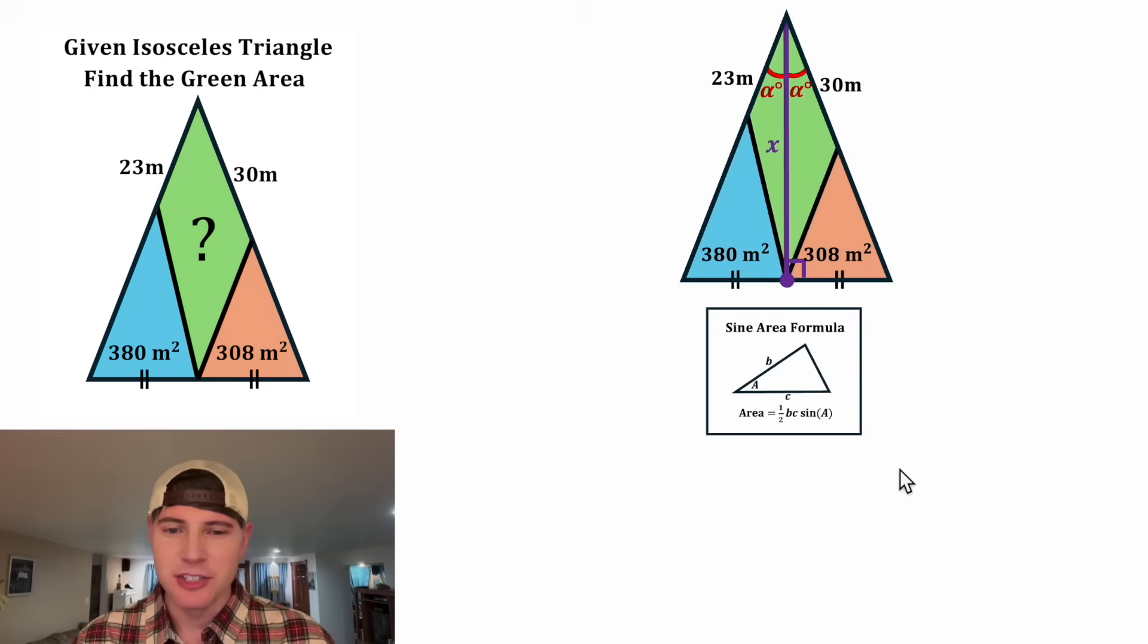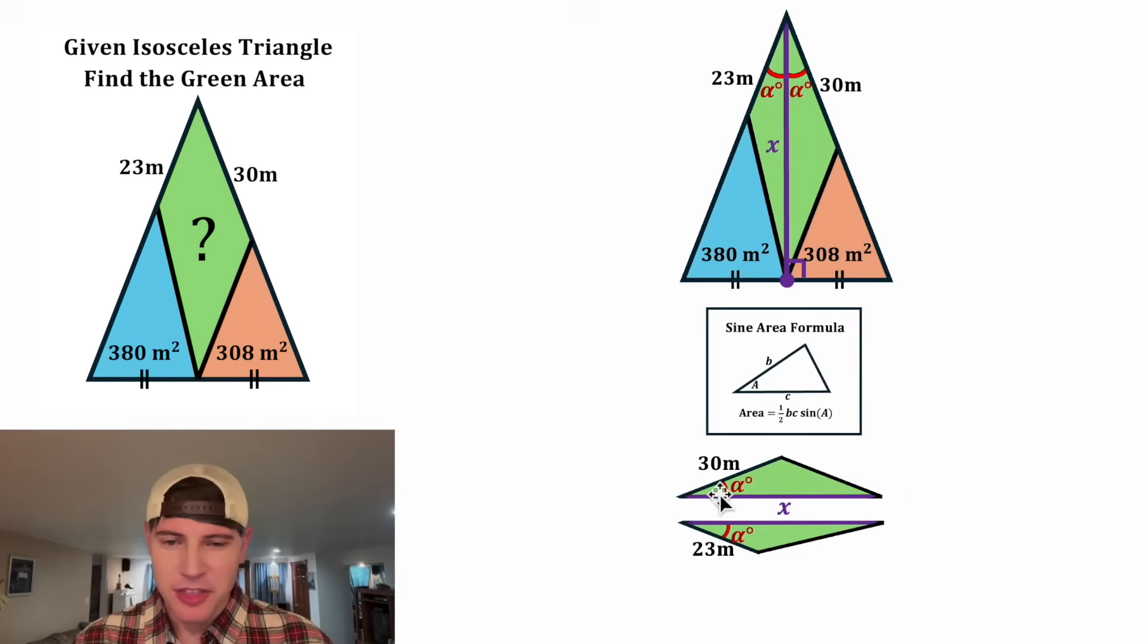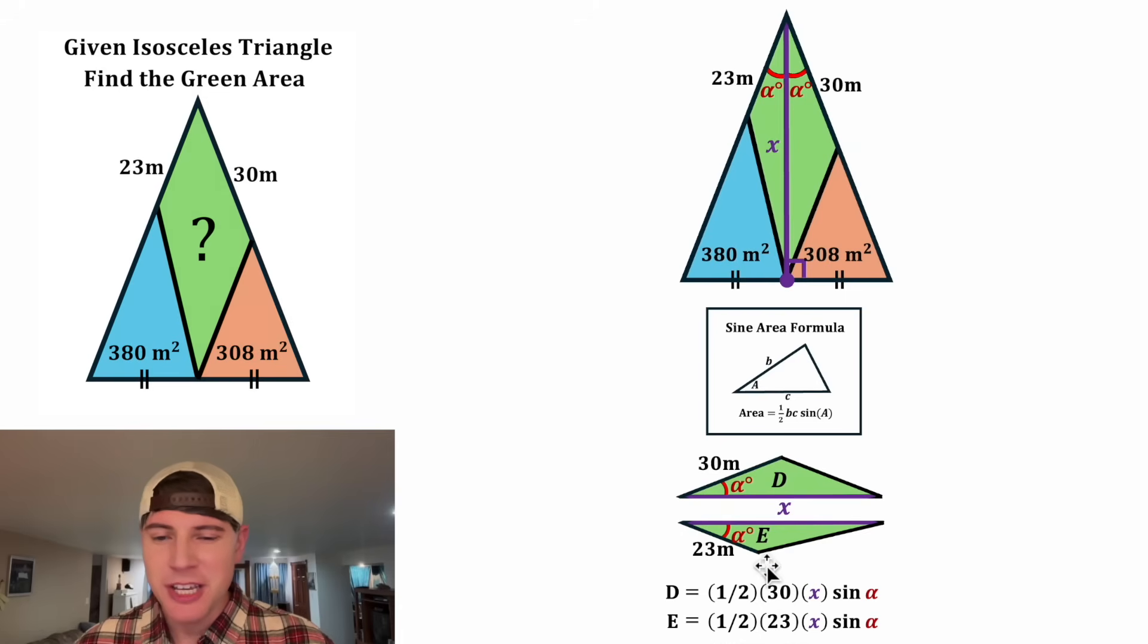So let's take our two green triangles and copy them down here. Let's label this area D and this area E. Now we can say D is equal to one half times 30 times x times the sine of alpha. And then E would be equal to one half times 23 times x times the sine of alpha. So these two areas have a lot of stuff in common. They both have a one half, an x, and a sine alpha. We can really simplify this if we look at the ratio of the two areas.